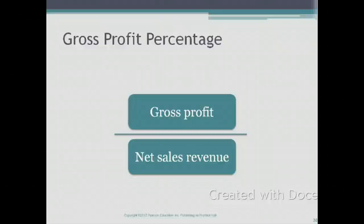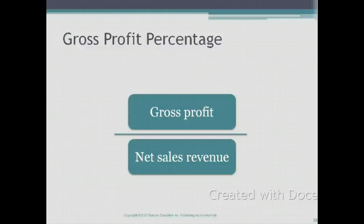Let's take a look at two new ratios. The first one is called gross profit percentage, which is calculated by dividing your gross profit by your net sales revenue.